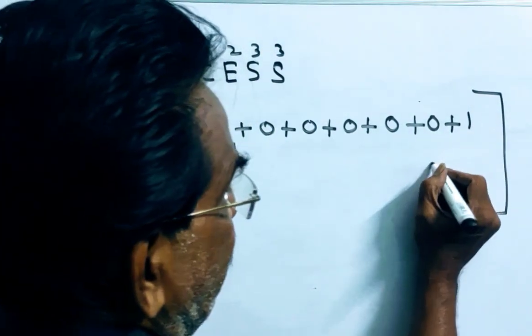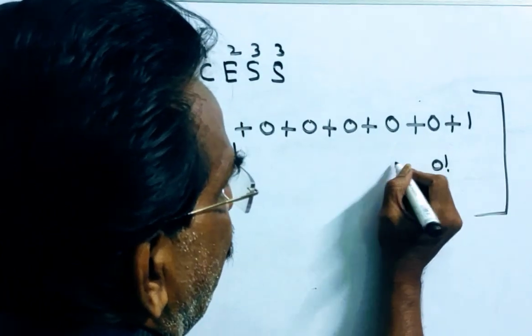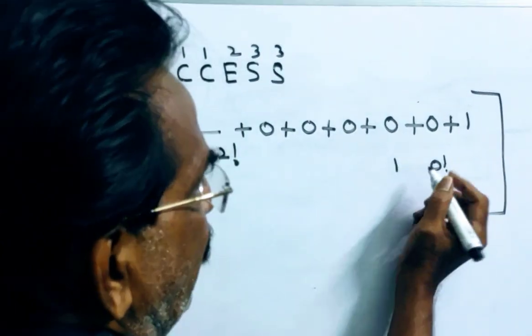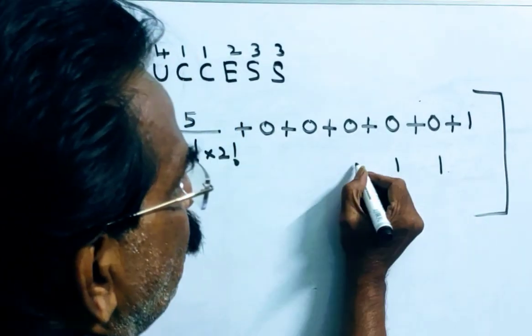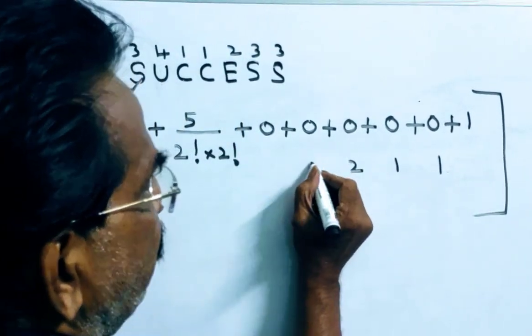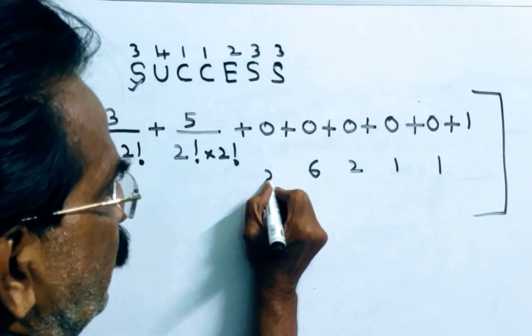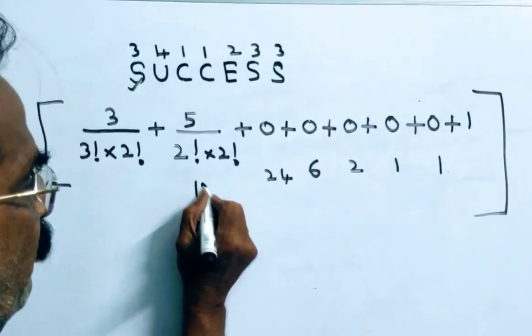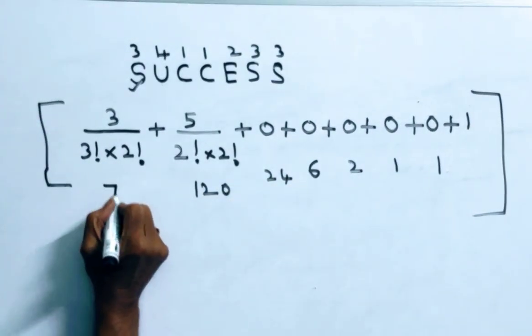multiply these things with 0 factorial, 1 factorial, 1 factorial 1, 0 factorial of course 1, this is 2 factorial 2, 3 factorial 6, 4 factorial 24, 5 factorial 120, 6 factorial 720.